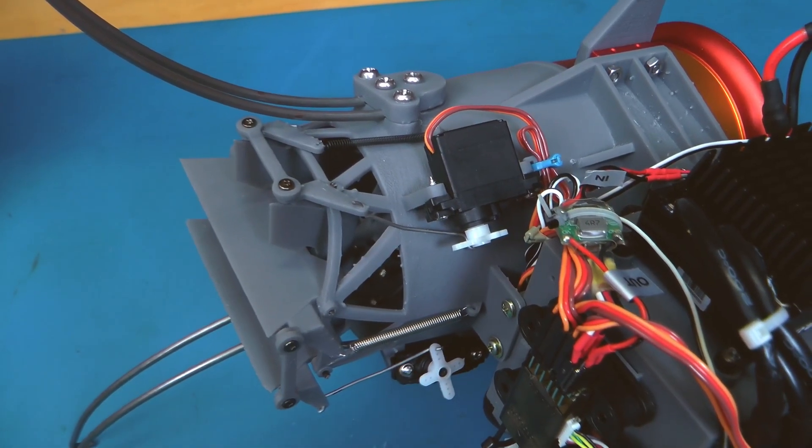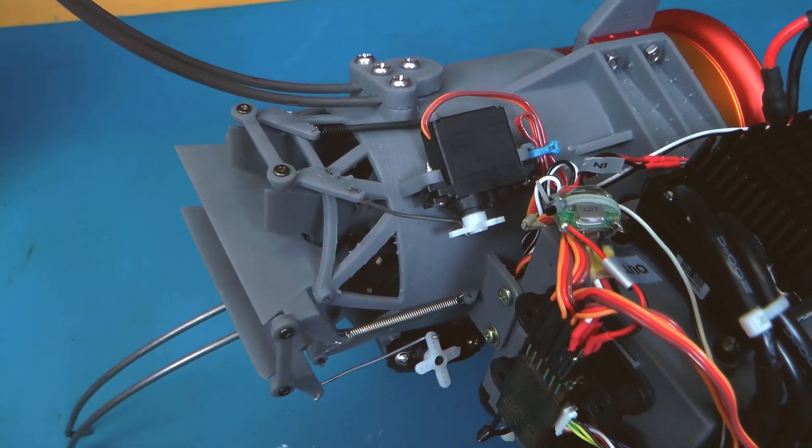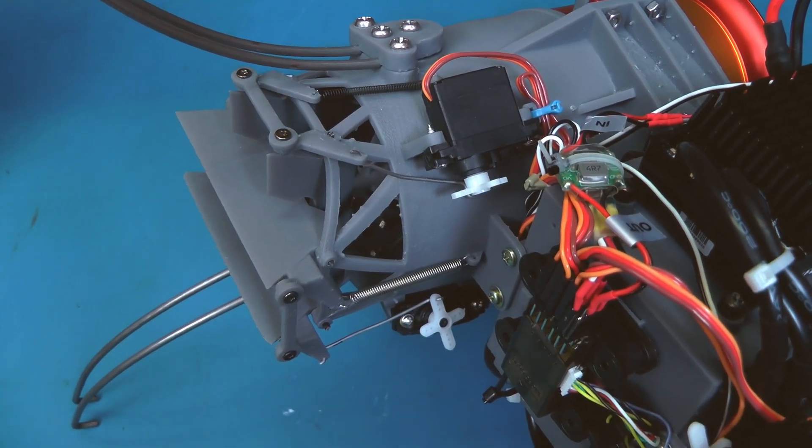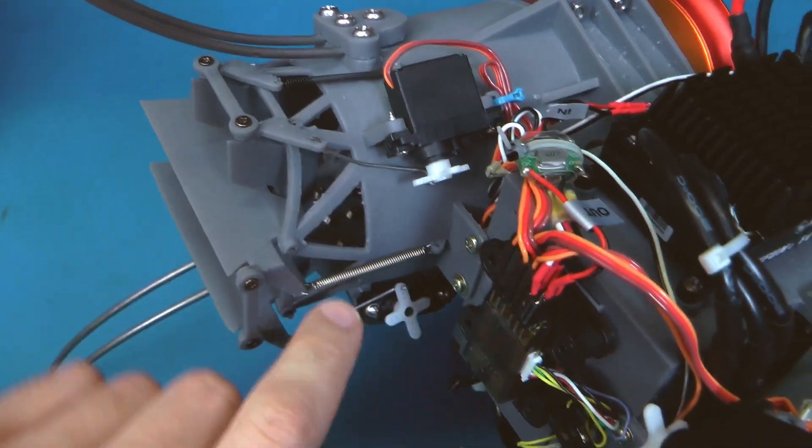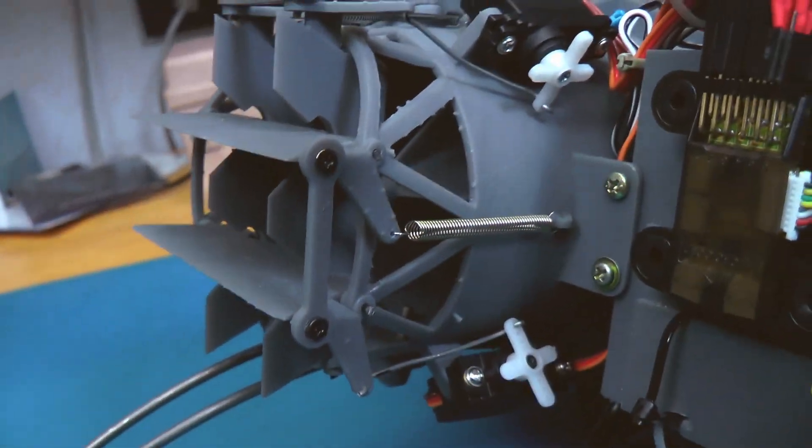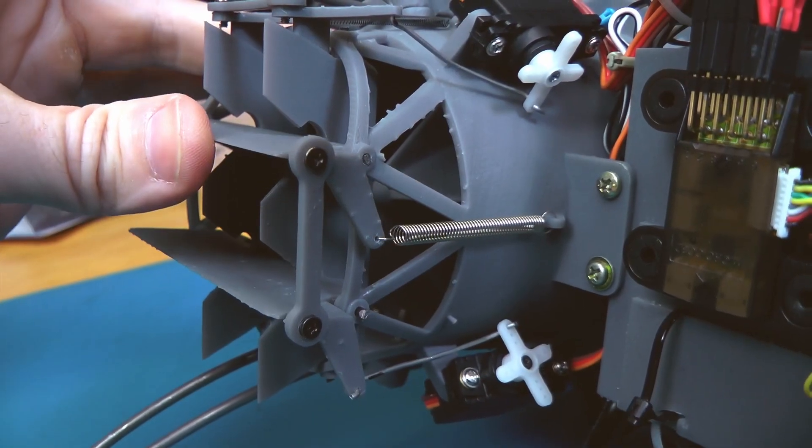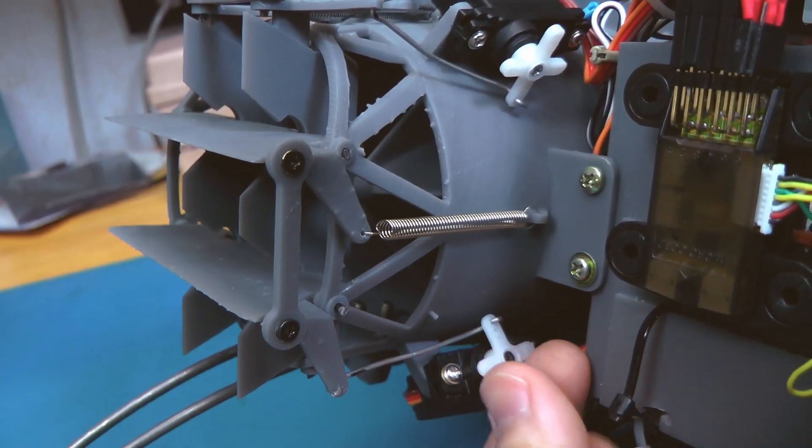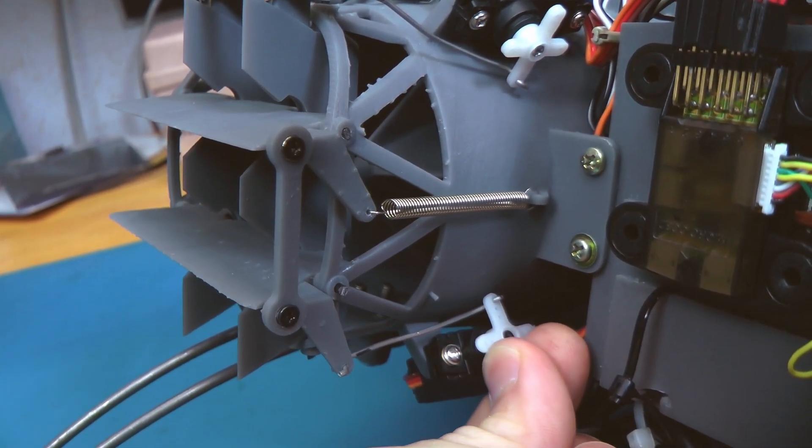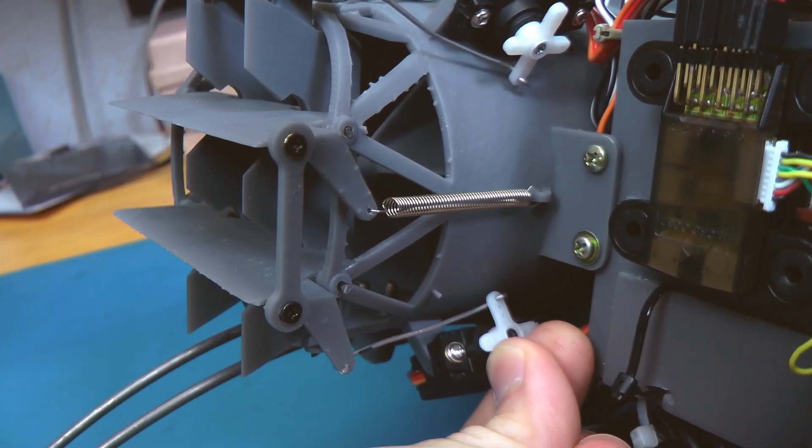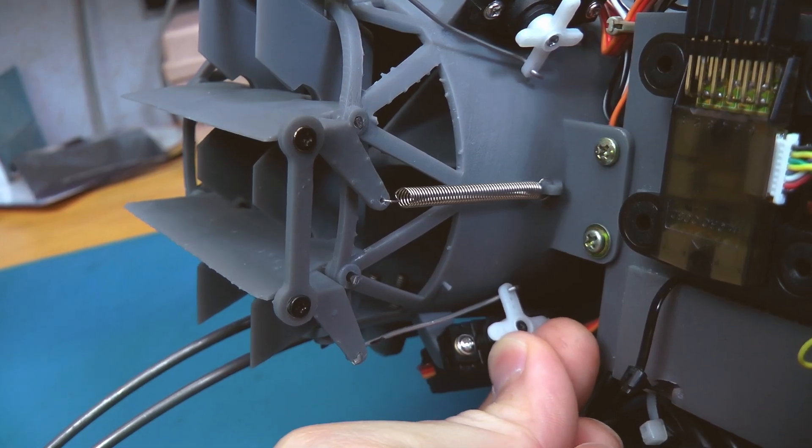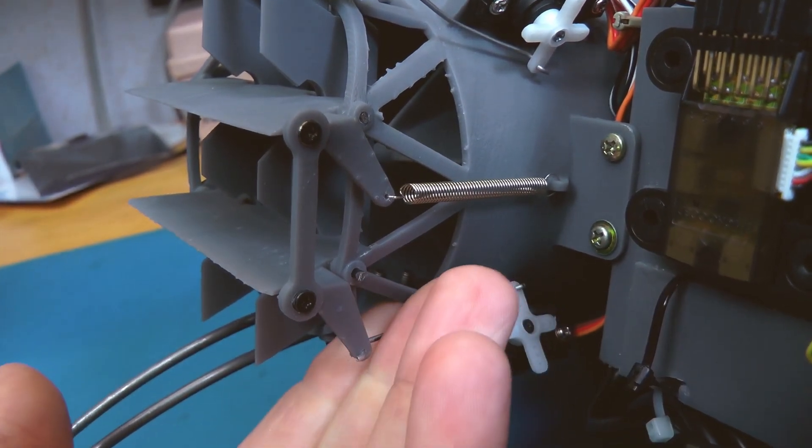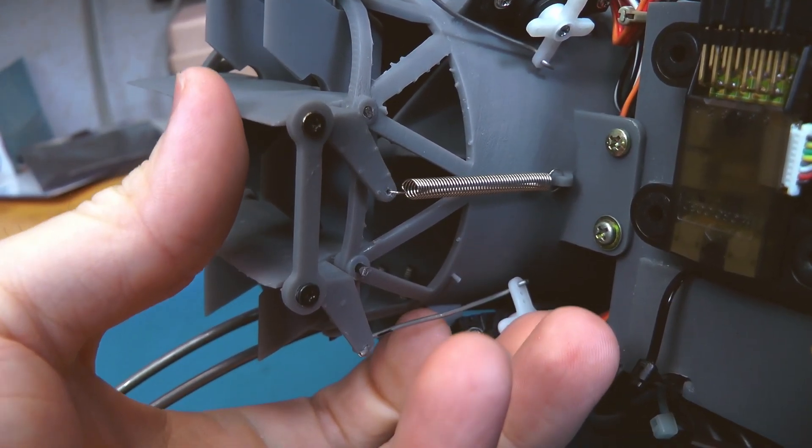One thing I've done on this that I think is slightly novel is an anti-backlash system. There's these springs here that pull on the vanes, and it keeps them at one side of the backlash at all times. If you turn the servo even the tiniest little amount, the vanes actually move properly. You don't have to take up all of the control backlash.